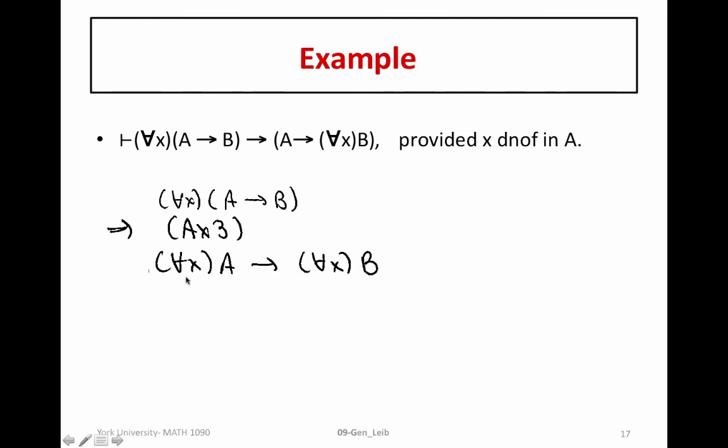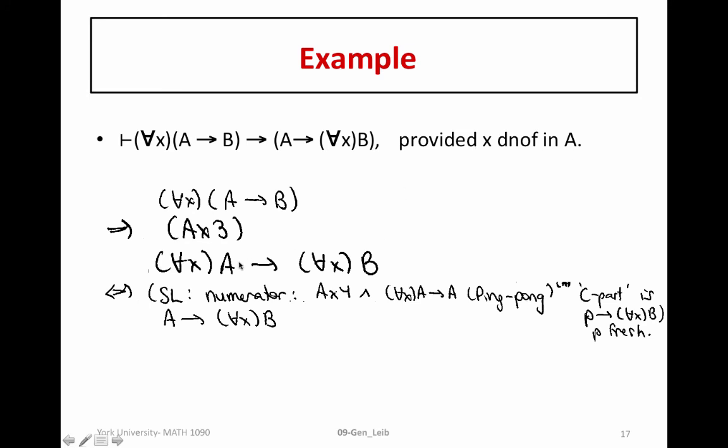Well, knowing that X does not occur free in A means actually that for all X, A is actually equivalent to A. So we're going to use strong Leibniz to replace for all X, A with A. We have to justify why these are equivalent. So I claim that since X does not occur free in A, AX4 tells us A implies for all X, A. At the same time, we know for all X, A implies A. This is simply just specialization.